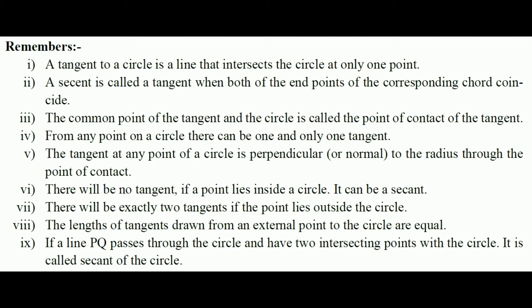Point 7: There will be exactly two tangents if the point lies outside the circle. From a point outside the circle, two tangents can be drawn.